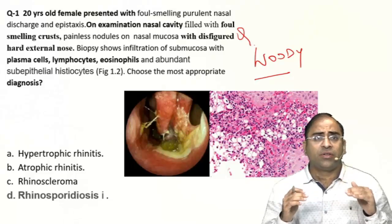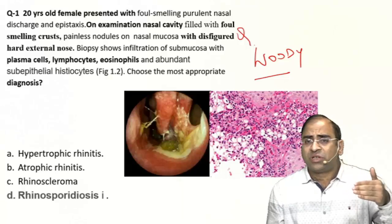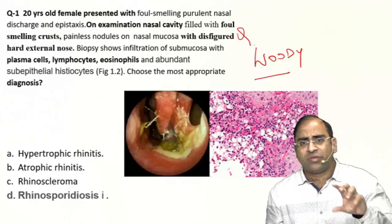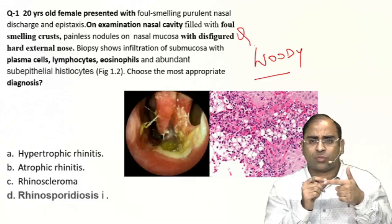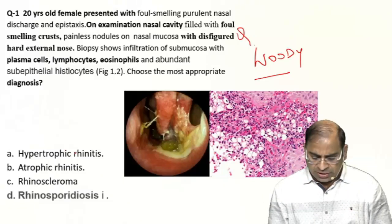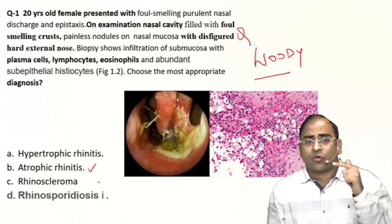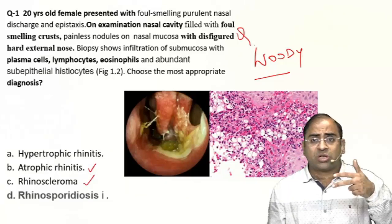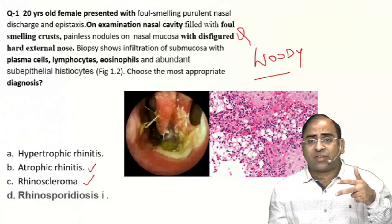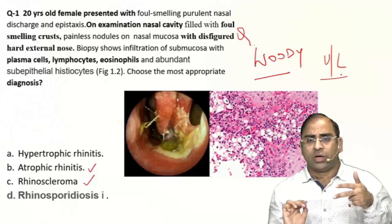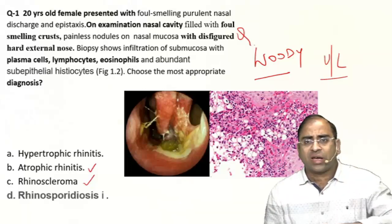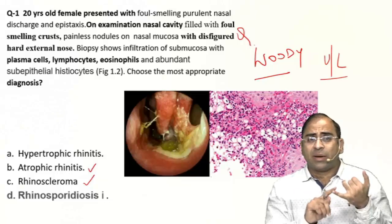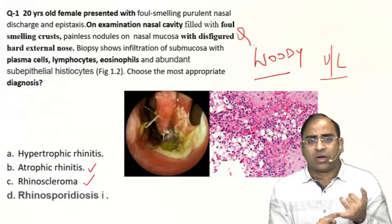Whenever foul-smelling purulent nasal discharge is present, I have three options in mind. First option: atrophic rhinitis. Second option: rhinoscleroma — even in rhinoscleroma we have very foul-smelling discharge. Third option: foreign body. However, if the examiner does not mention 'unilateral,' we can rule out foreign body. Unilateral purulent discharge — no second thought, the answer must be foreign body. In this case, examiner says foul-smelling purulent discharge without mentioning unilateral, so it can be atrophic rhinitis or rhinoscleroma.